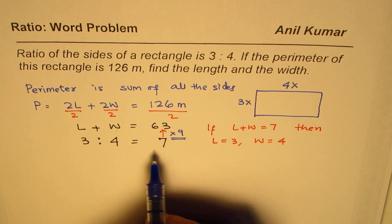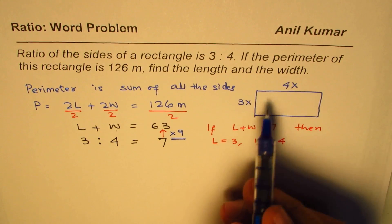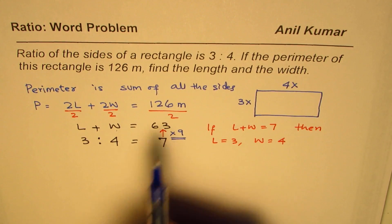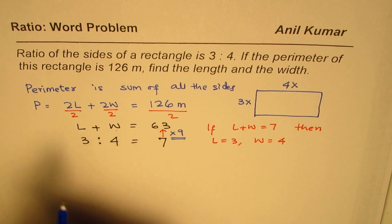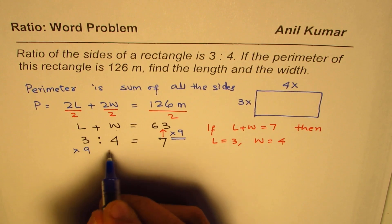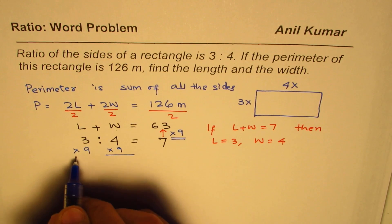So to get a perimeter rather half of the perimeter to be 63, our length and width ratio should be multiplied by 9, right? So we'll times them by 9 each. So if I do that,